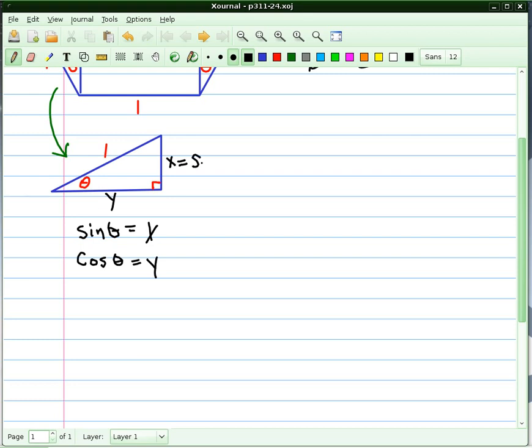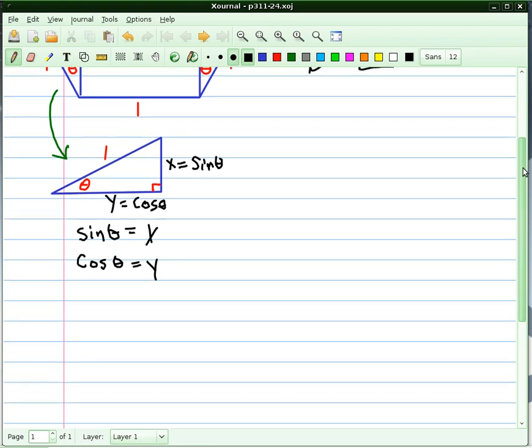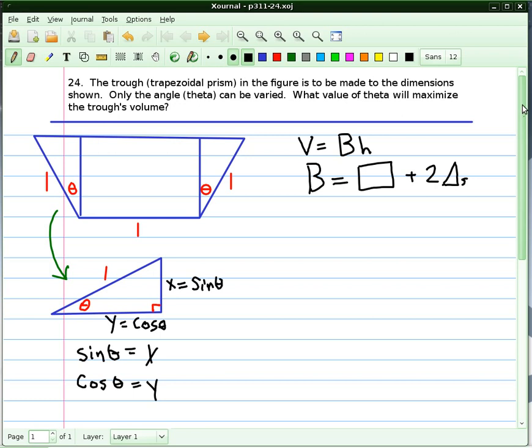In this case, I can put cosine theta right here, sine theta right here, and cosine theta right here. If you go back up to the main picture, the height of this rectangle is now cosine theta. This is still 1, this is sine theta, and this is sine theta.